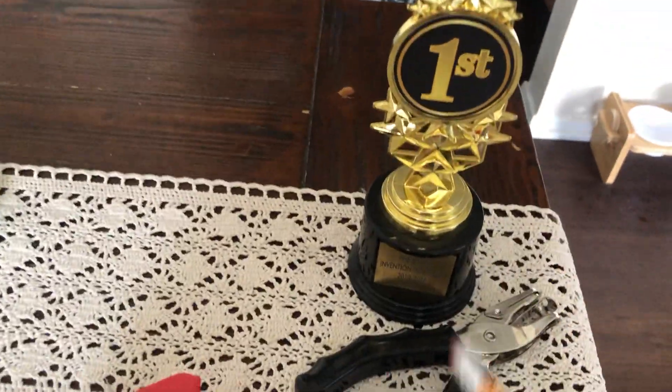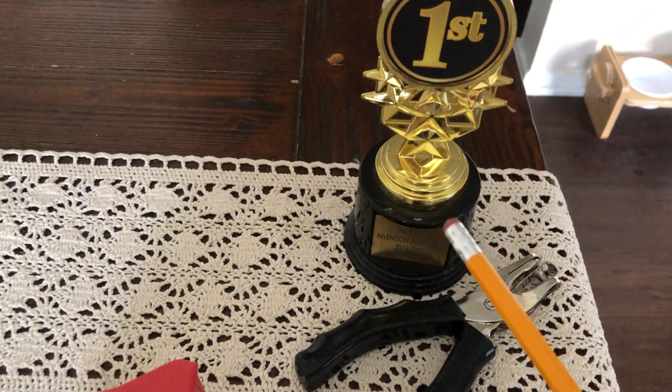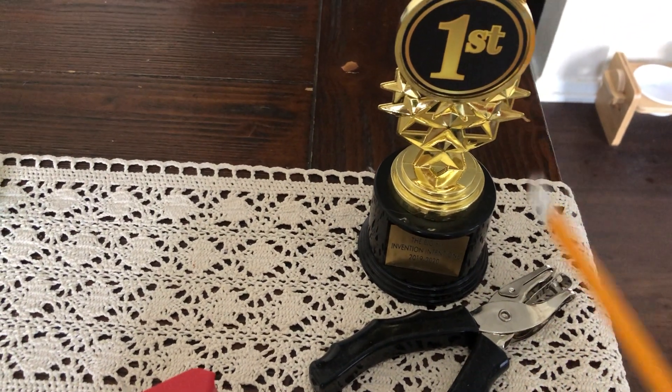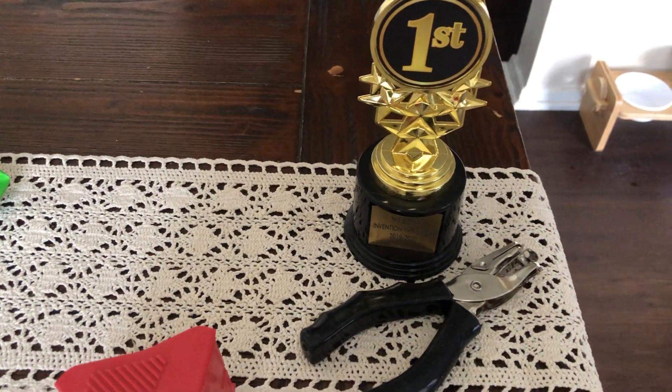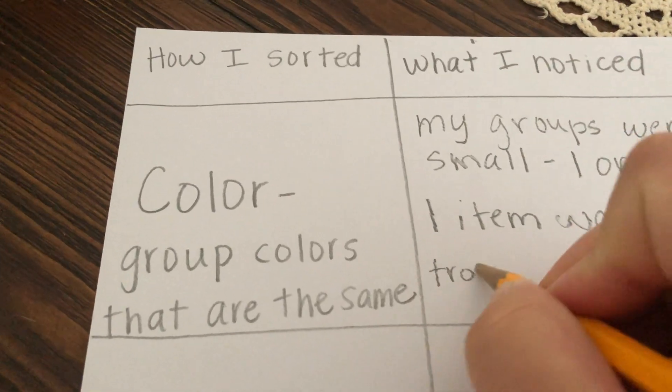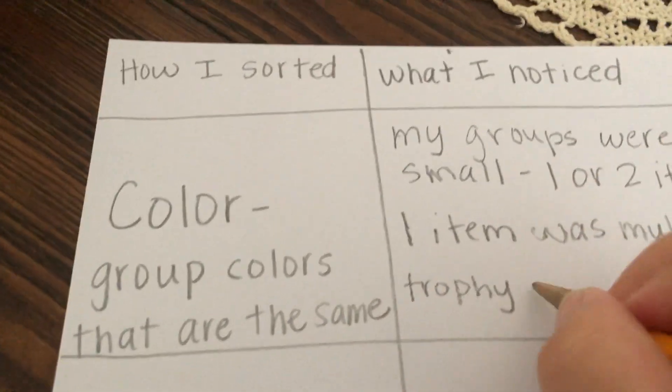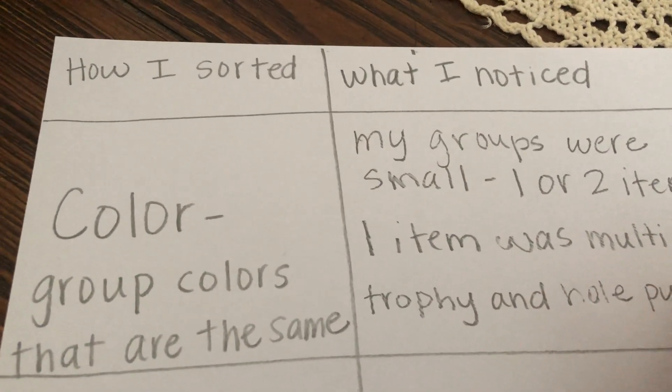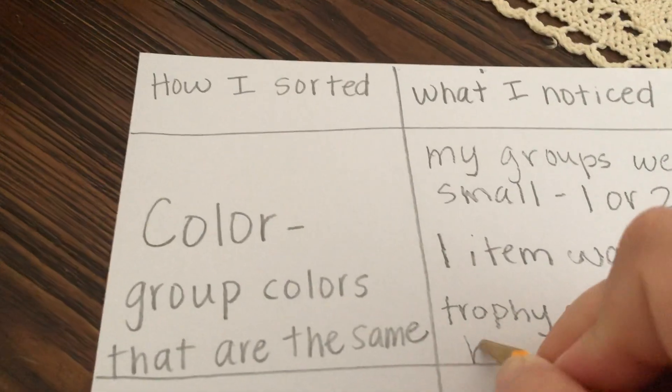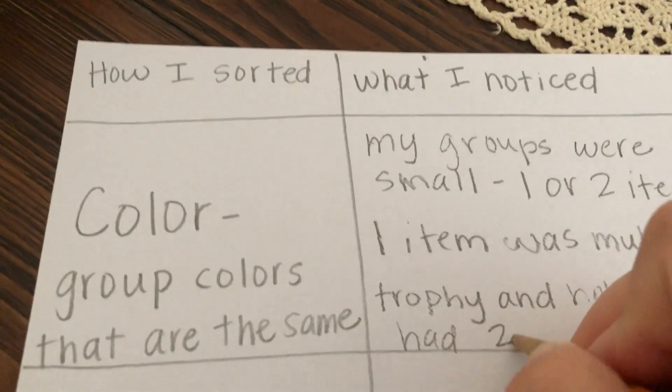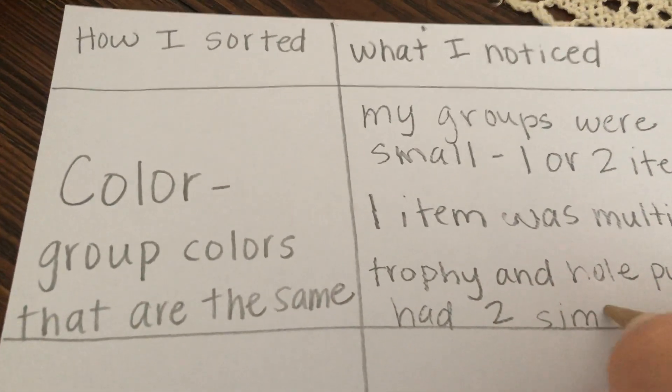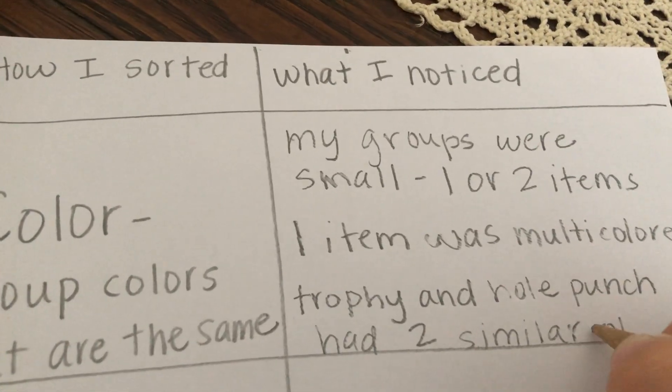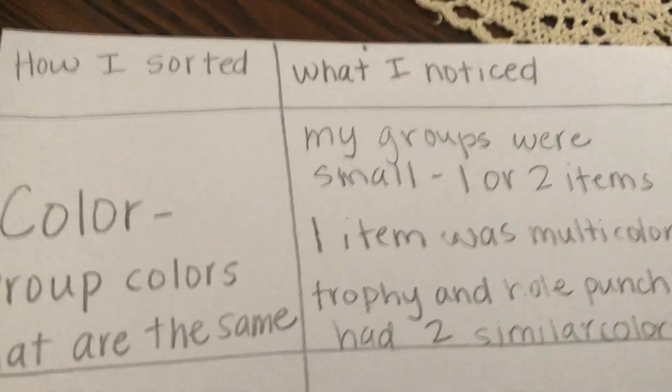And then something I just thought of too that was interesting was the way I could sort my trophy and my hole punch. They had black and a metallic color, and I thought that that was pretty interesting. So I'm going to say my trophy and hole punch had two similar colors.